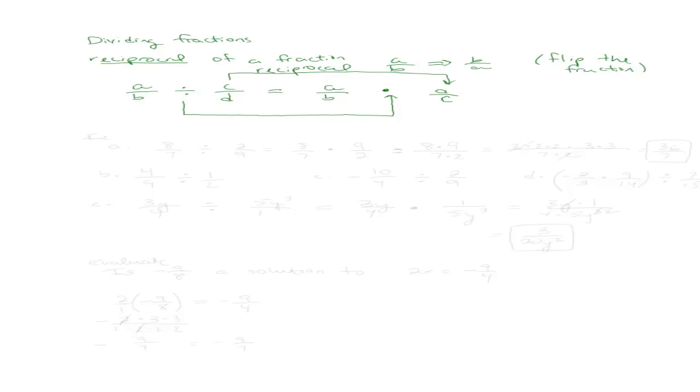And that's it, easy as that. Let's talk about how to apply this. I'll give you some examples. Say we have 8 sevenths divided by 2 ninths. What we're going to do is leave the first fraction the same, change the division sign to a multiplication sign, and flip the second fraction.